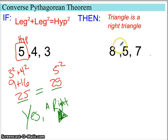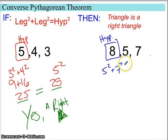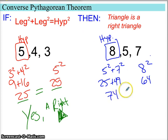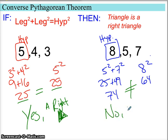Looking at this next set of sides, again make sure you find your longest side and put it in the hypotenuse position. We have 5 squared plus 7 squared, comparing that to 8 squared. That gives us 25 plus 49 on one side and 64 on the other. 25 and 49 add up to 74, which is not equal to 64. So these two values are not equal — this is not a right triangle.